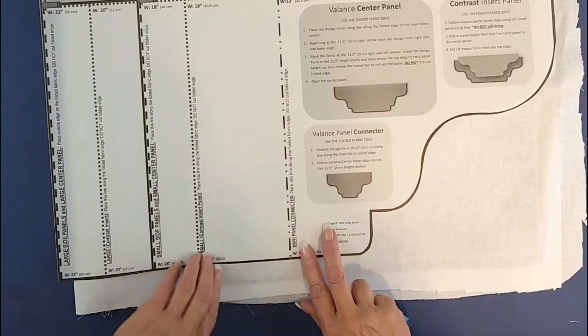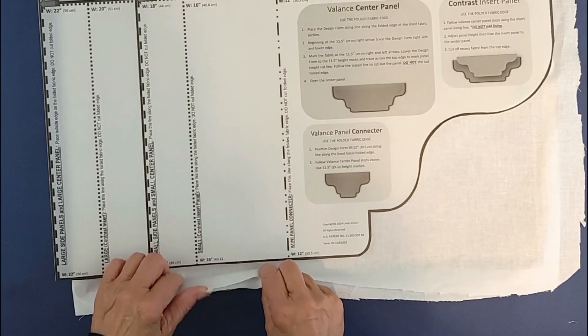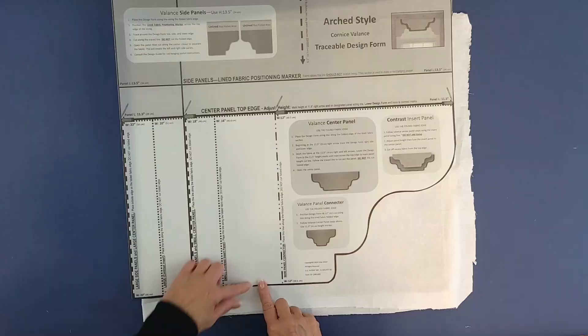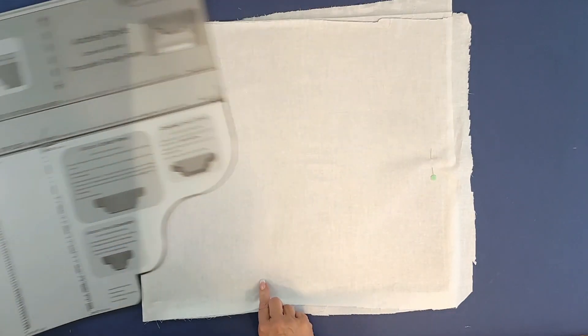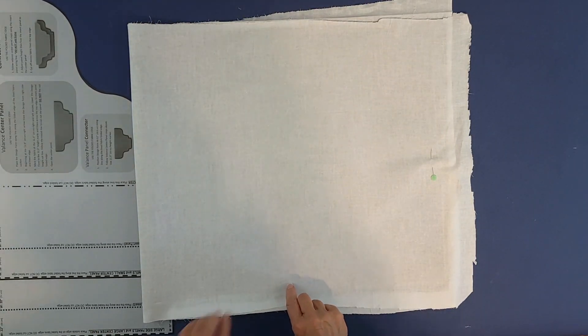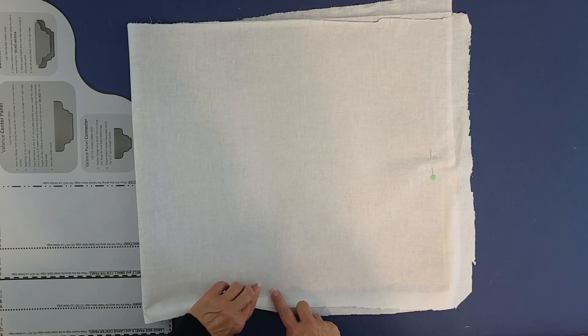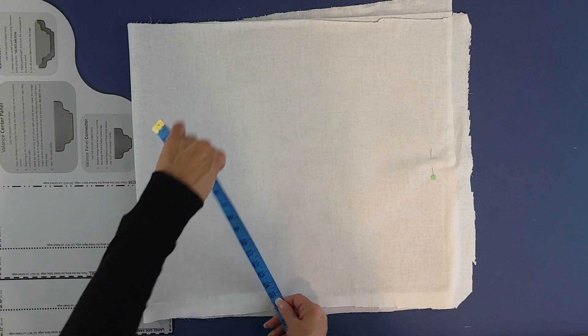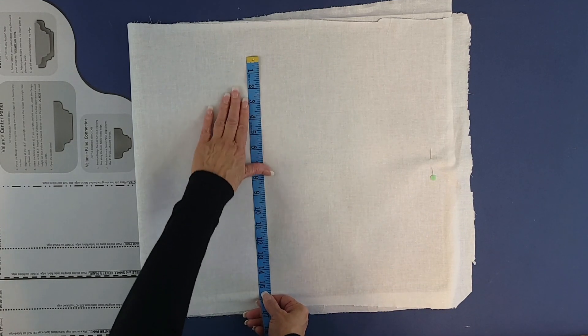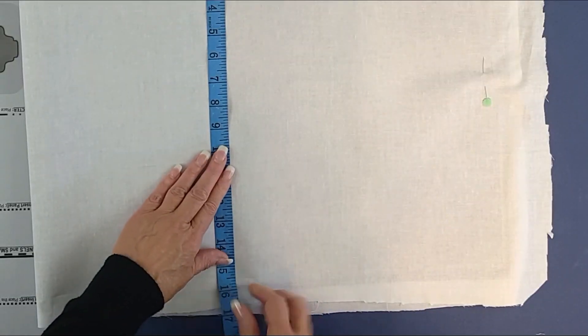Since we're making a custom size panel, we want to make sure we stay inside where the lining is securely fused to the fabric. I'm going to measure up 15 inches to ensure I stay inside the fused fabric from top to bottom. This is a bit different than the typical tracing.